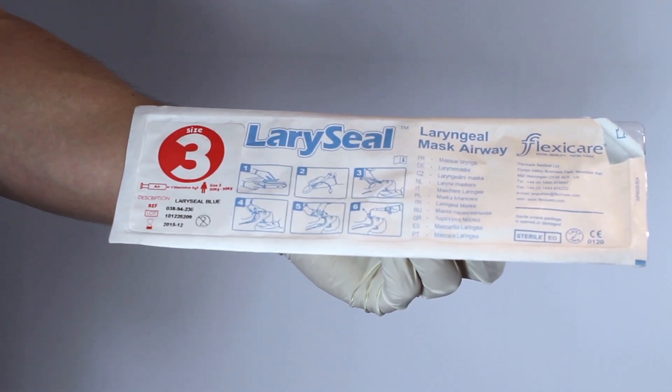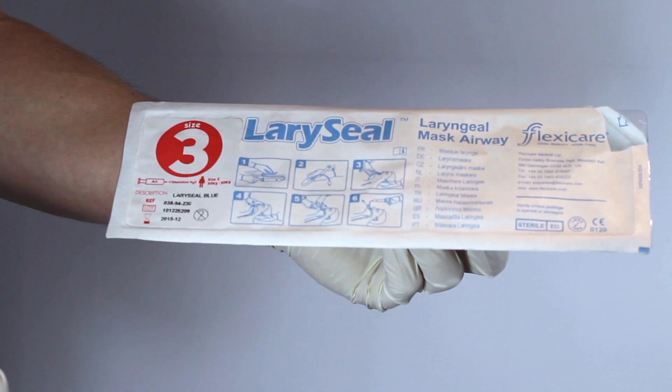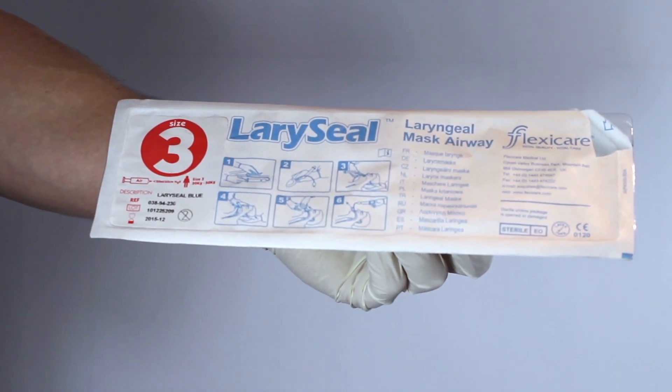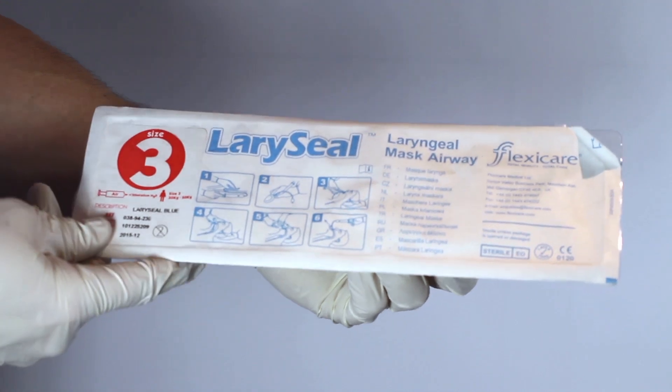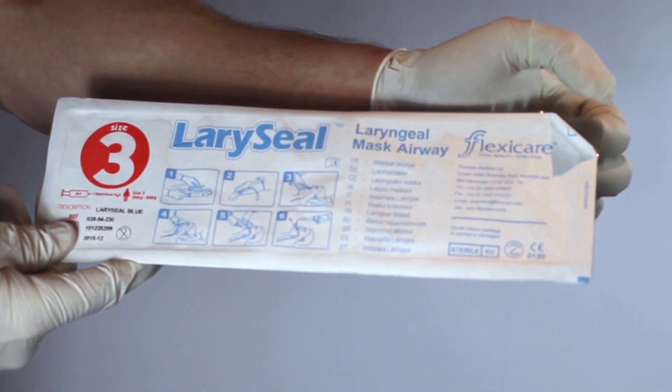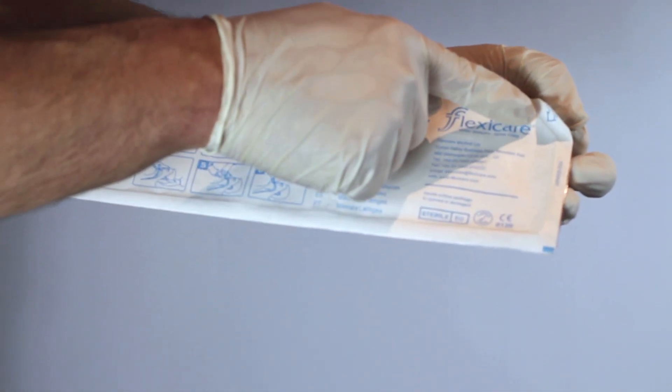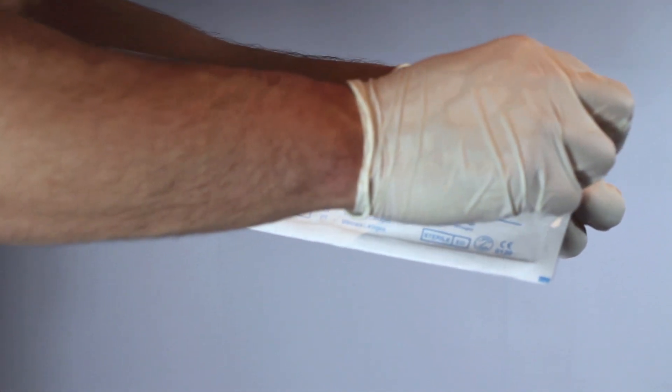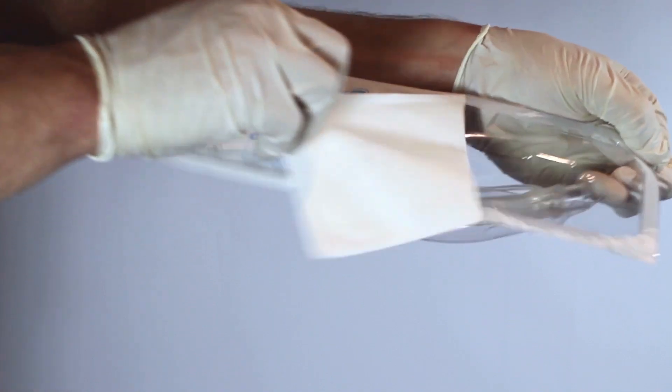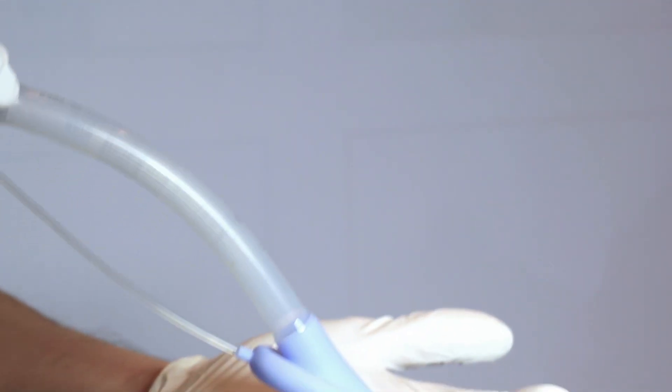When you have selected the correct size Laracel Blue laryngeal mask you will be ready to remove it from the thermoform packaging. First locate the peel here tab. Place the tab securely between your thumb and index finger with your other hand holding the clear formed shell of the packaging. In one smooth action pull the Tyvek cover back applying even force to each side. Laracel Blue can now be removed from its protective packaging.